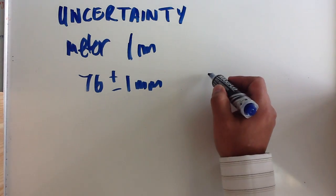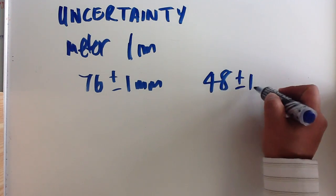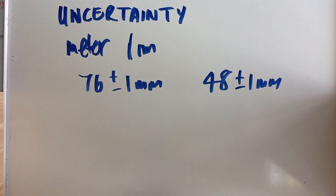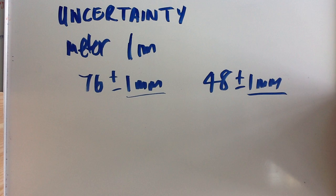If you've got a second reading of 48, it'll also be plus or minus 1 mm. So in this case, the absolute uncertainty in both cases is 1 mm because that's the precision of your meter rule.